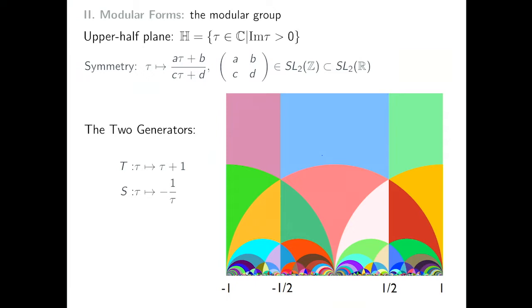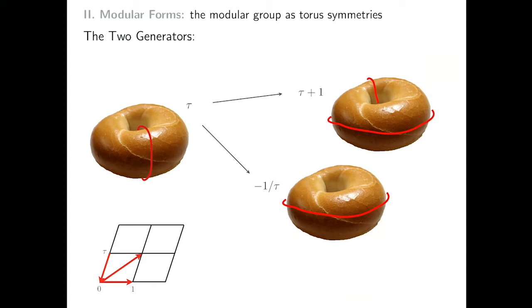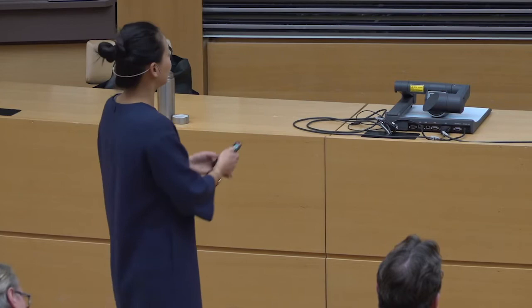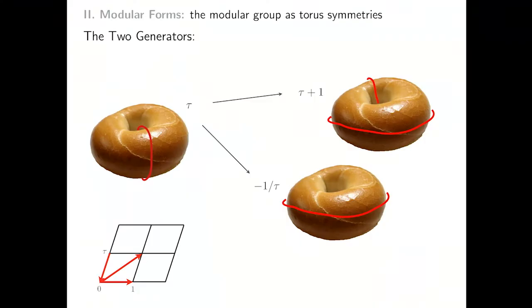SL(2,Z) is a nice group because it also shows up in other contexts. For instance, SL(2,Z) is the mapping class group of the torus. So what these two generators do is change the way you parametrize your torus, but they don't change the torus itself. For instance, you might cut a donut one way, but a bagel you're more likely to cut another way — and that's related by an S transformation.